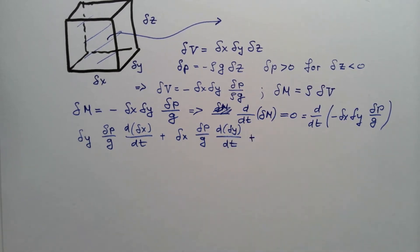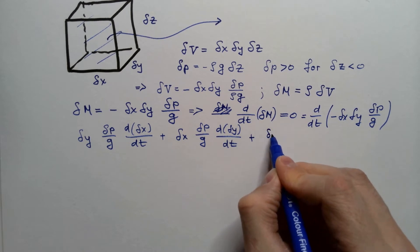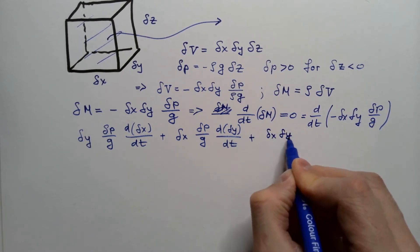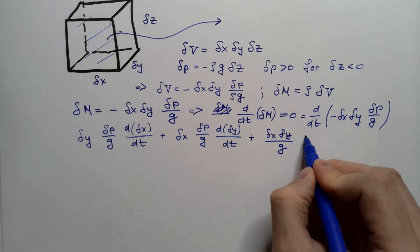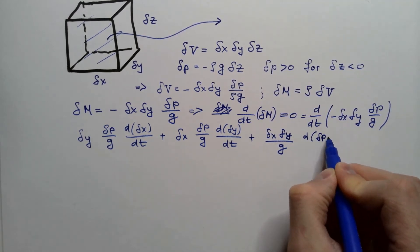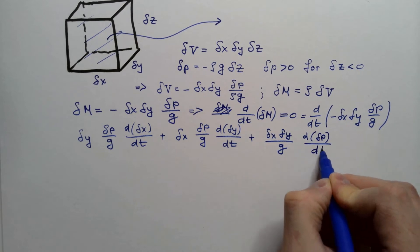Plus delta x delta y over g, g is constant of course, d of delta p over dt, and that is equal zero.